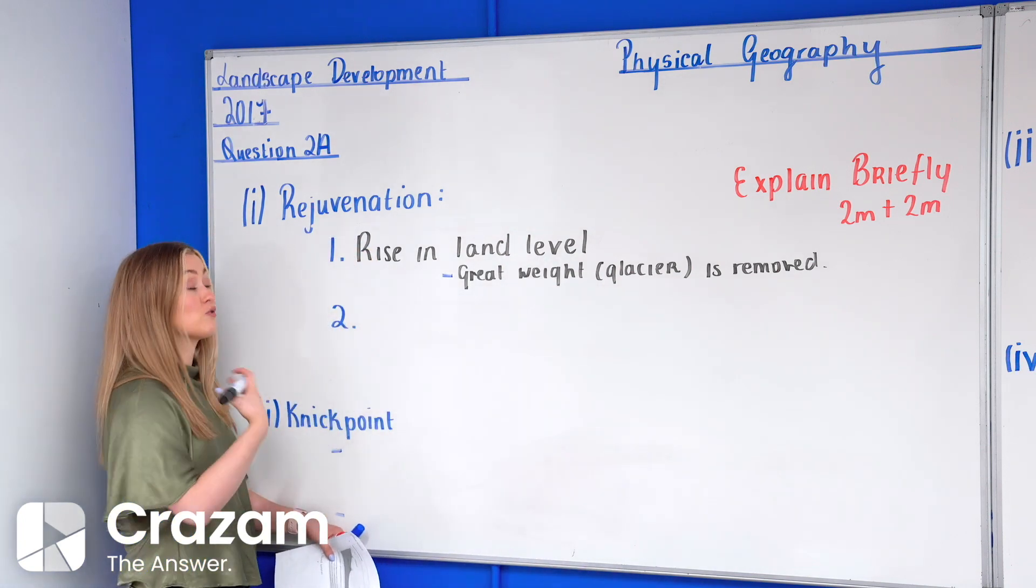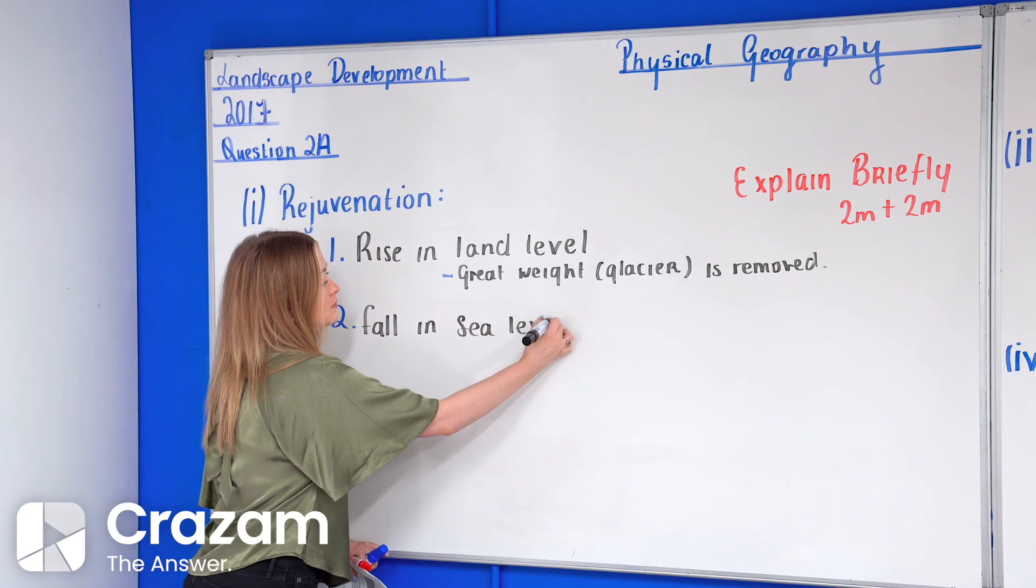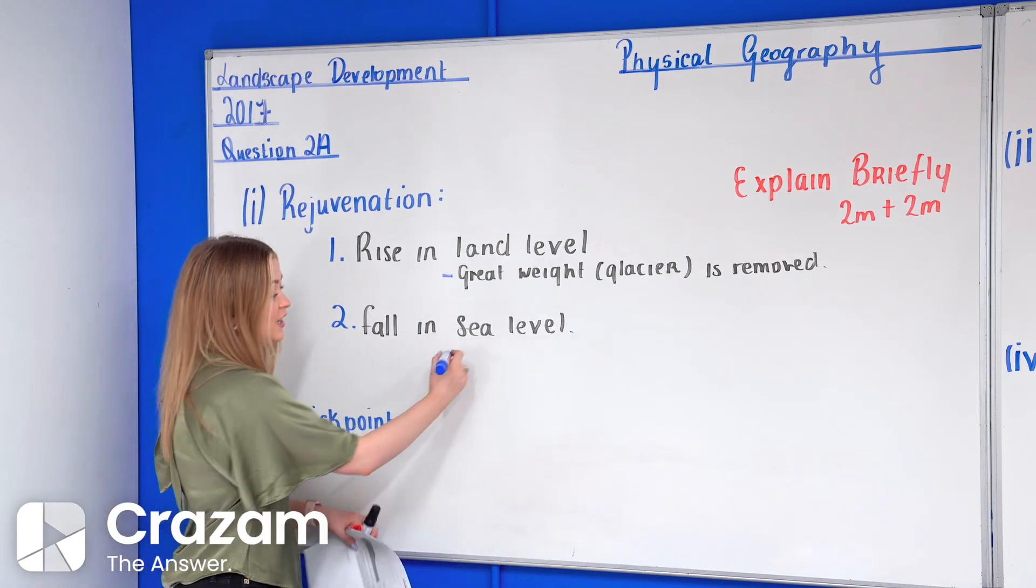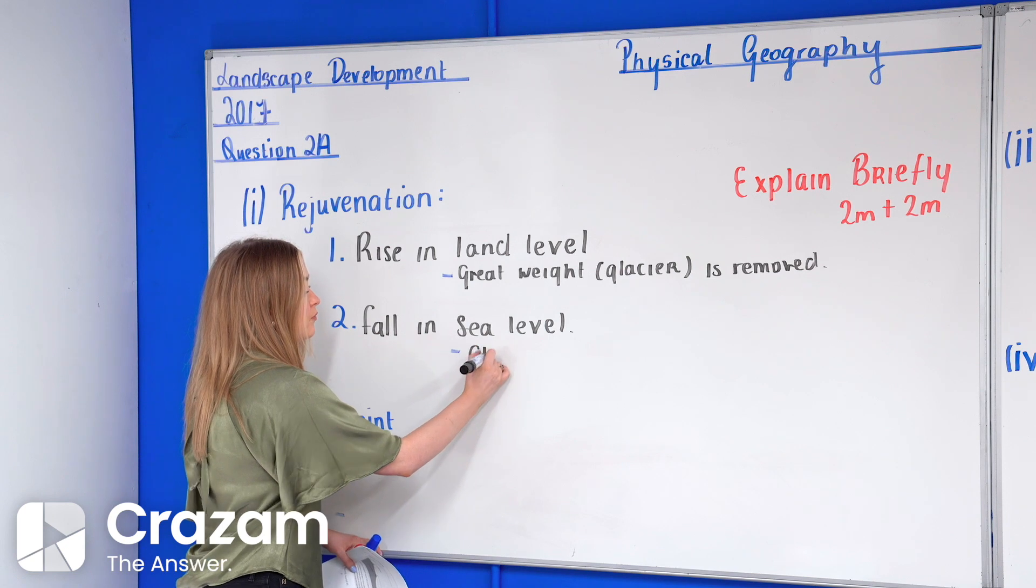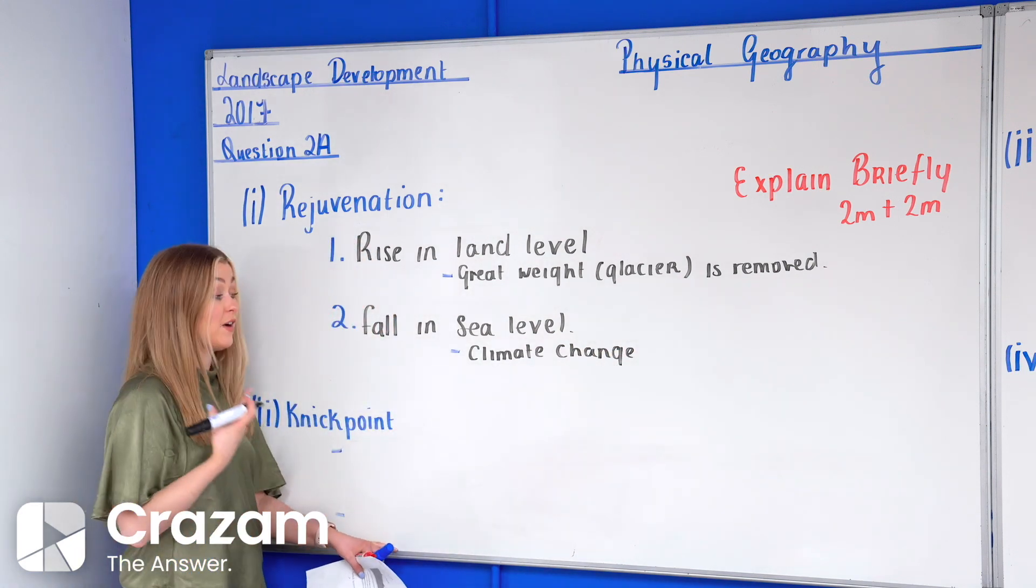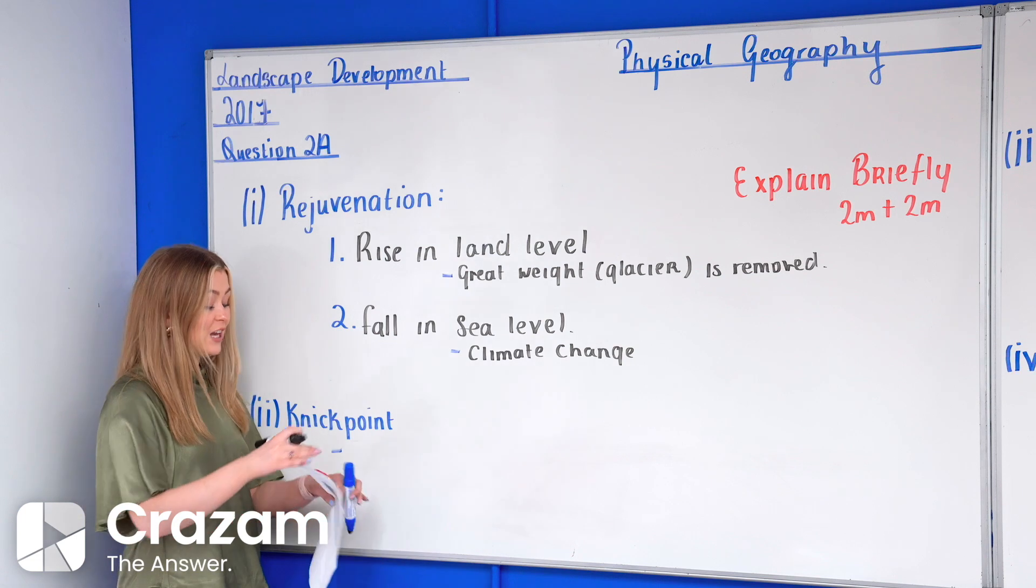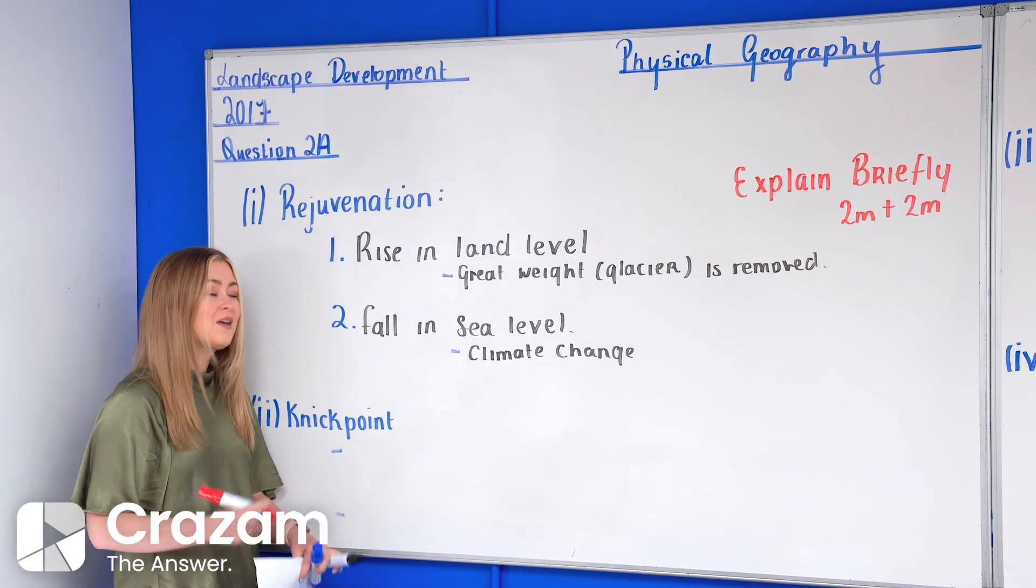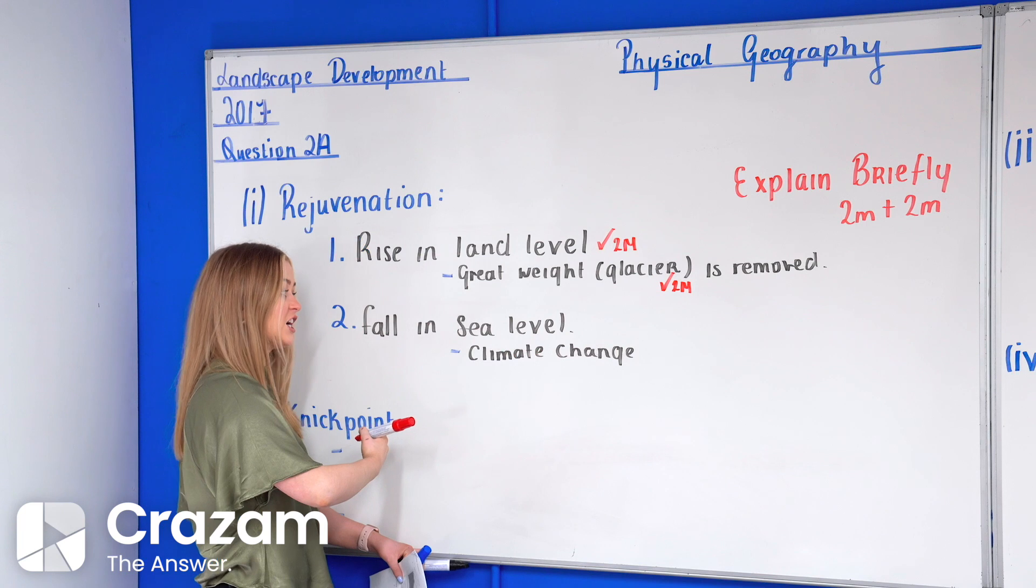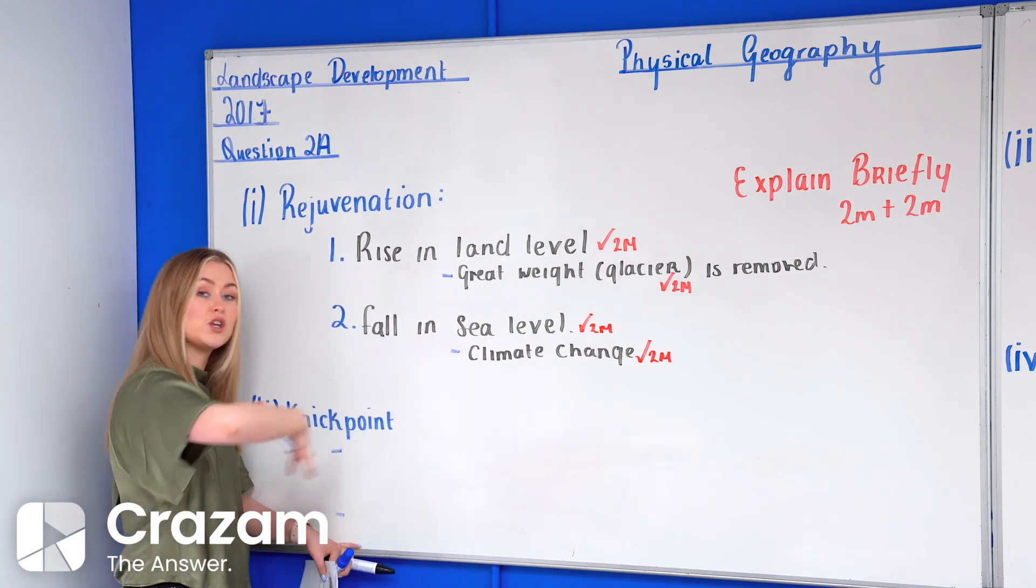A second reason for river rejuvenation would be a falling sea level. So the sea level actually falls. Now generally speaking the main reason for a falling sea level is due to climate change. You can expand on this point but it could be due to increased evaporation, higher temperatures or also if freezing occurs, so some of that water is turning to ice. Now here this question as I said a little bit unusual of a marking scheme. However there's two marks going for my first reason and two marks for my additional point here. Two marks going for my second reason and my expansion on that.